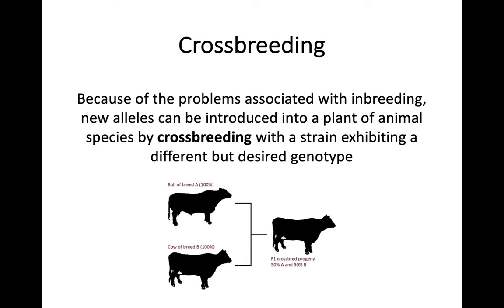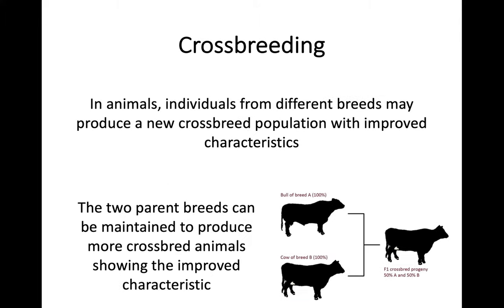We've talked about inbreeding and why people choose to use it, but also the issues associated with it. For this next part we're going to talk about crossbreeding, which is very different. We know there are problems associated with inbreeding, and now we're looking at how new alleles can be introduced into a plant or animal species by crossbreeding — effectively breeding two different organisms or strains together. Individuals from different breeds can reproduce in order to produce a new crossbreed population with improved characteristics.